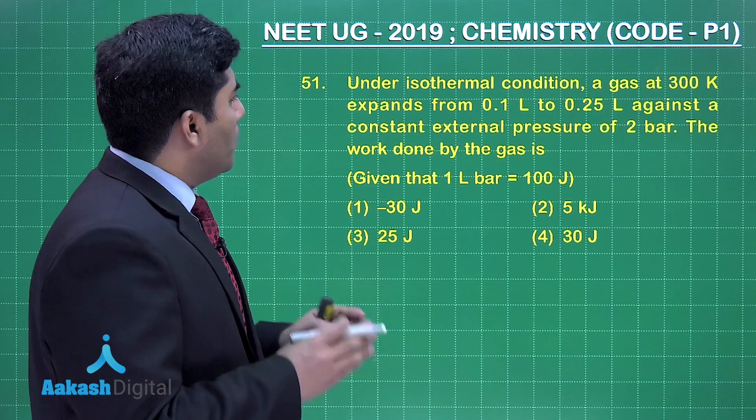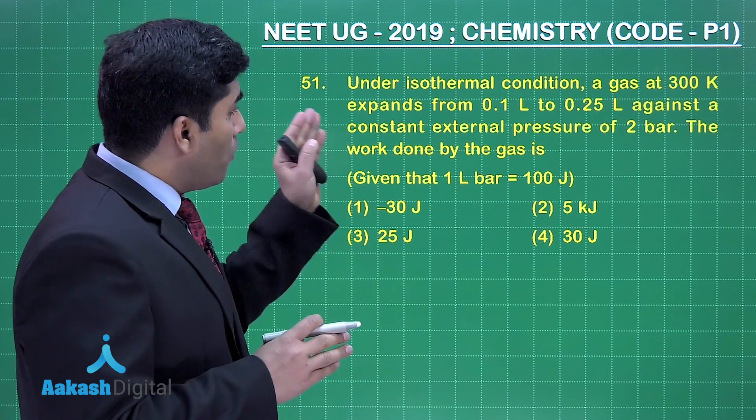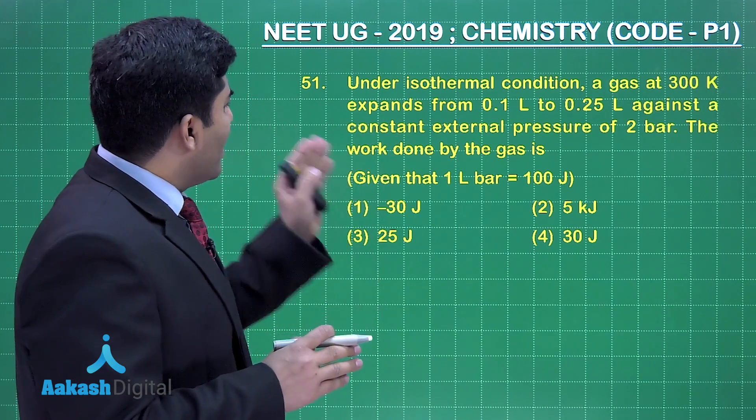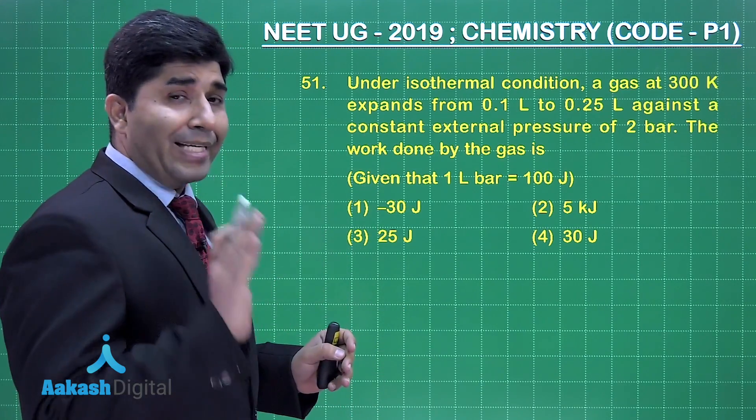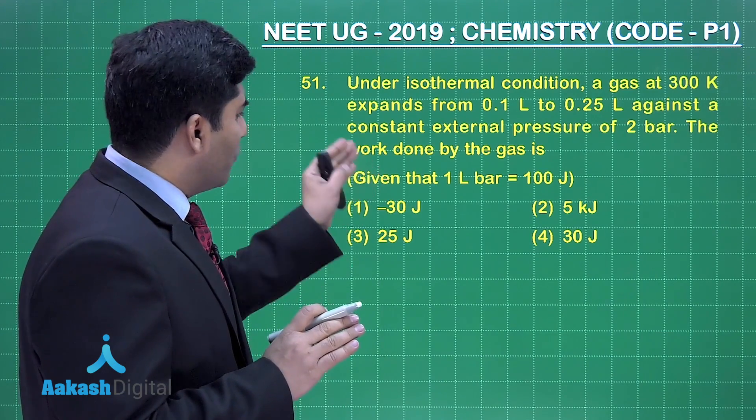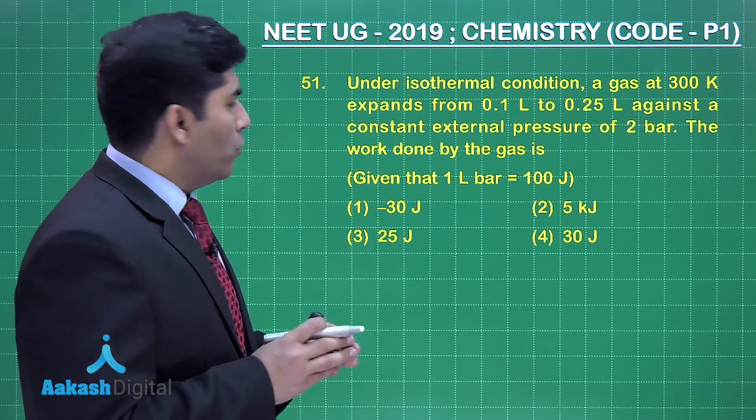Now in this question is asking: under the isothermal condition a gas at 300 kelvin expands from 0.1 liter to 0.25 liters against a constant external pressure of 2 bar. The work done by the gas is... Now four options are given and it is also given that one liter bar is equal to hundred joules. Let's move on to the solution.